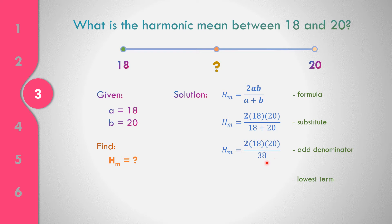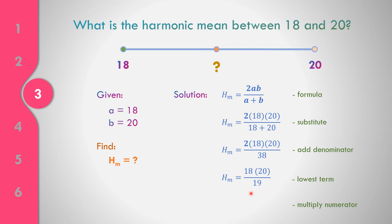Next, let us get the lowest term before we multiply to make computation easier. We reduce 2/38 to its lowest term, which is 1/19. So we have 18 times 20 in the numerator. 18 times 20 equals 360, giving us 360/19. The harmonic mean between 18 and 20 is 360/19.